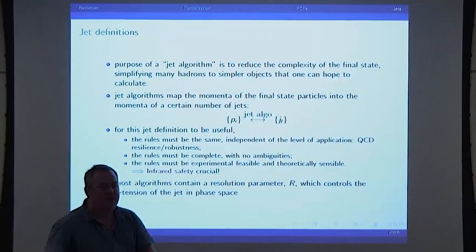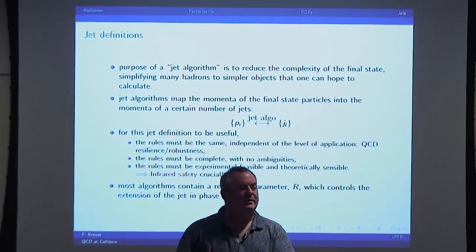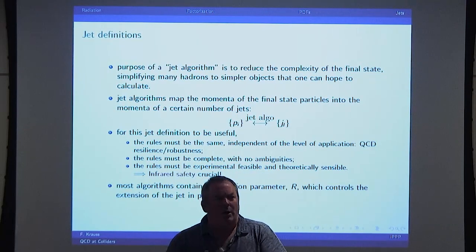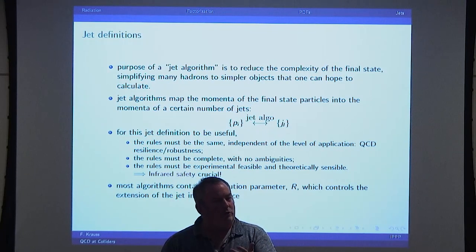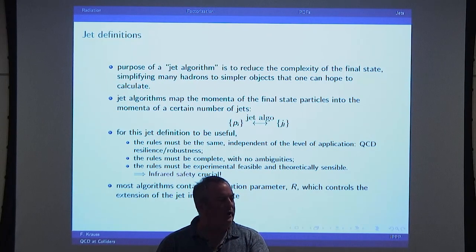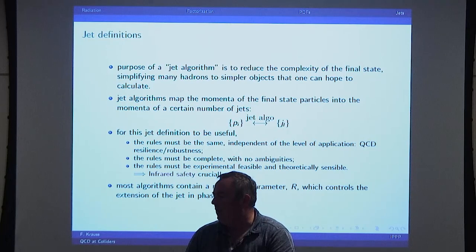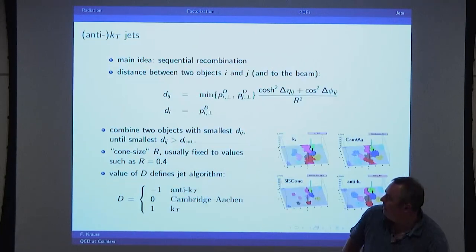The catchword a couple of years ago was infrared safety. Basically you want to convince yourself that if you add another soft particle — let's say we have 20 partons and we would map them onto say three jets — we want this to be robust in the sense that if we add a gluon which has practically no energy, we don't suddenly get four jets. That's the pictorial meaning of infrared sensitive or infrared safe.